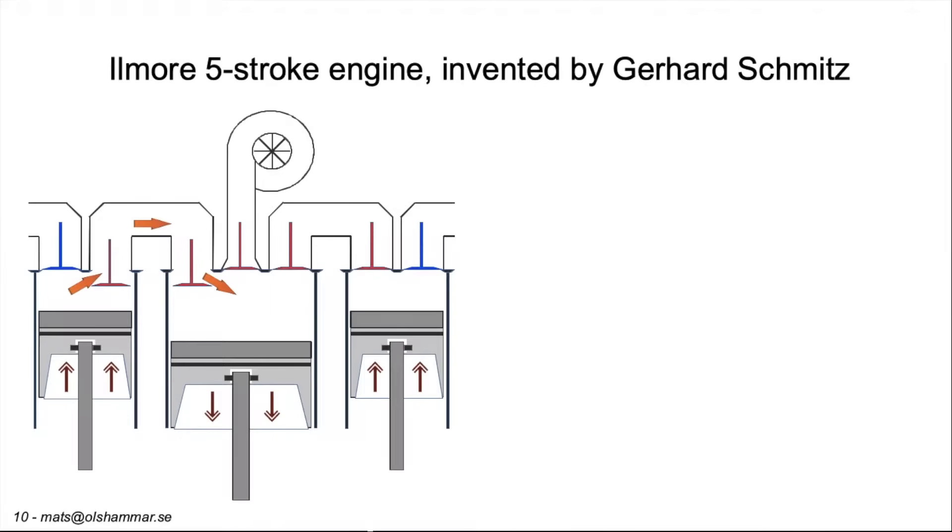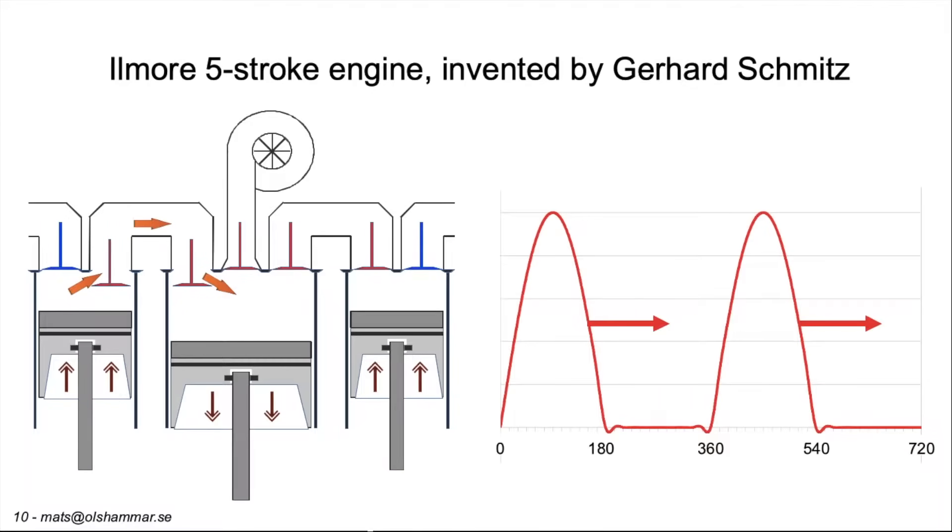This is the Ilmor five stroke engine. It was invented by Gerhard Schmitz in the year 2000. The idea is to add an extra exhaust cylinder but there is no combustion in this. This cylinder will first be powered by exhaust from the left combustion cylinder and then from the right.